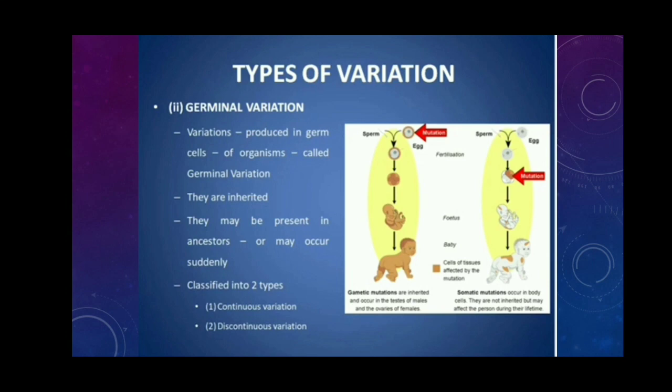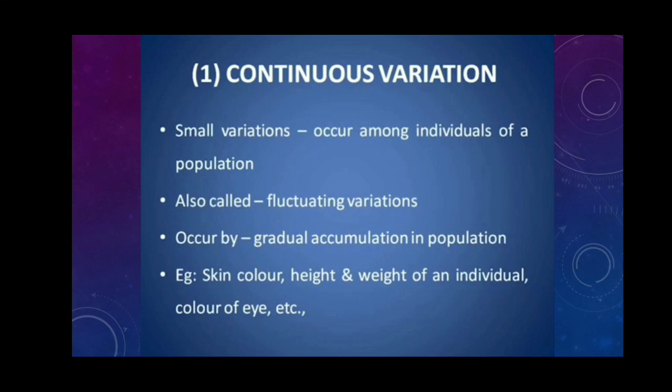Continuous variation refers to small variations which occur among individuals of a population. They are also called fluctuating variations. These continuous variations occur by gradual accumulation in a population. For example, skin color of the people, height and weight of an individual, color of eye, etc.